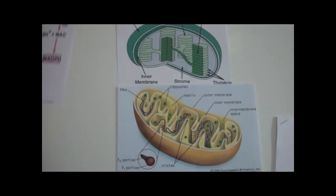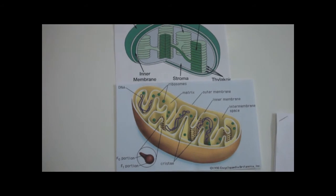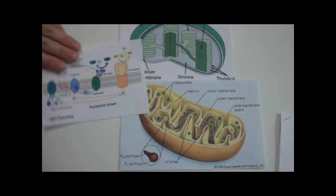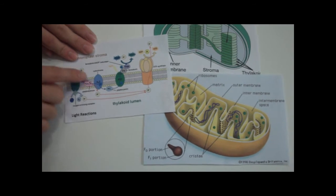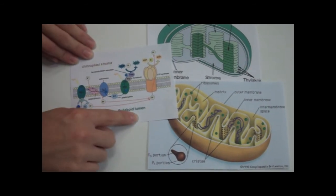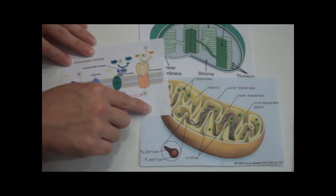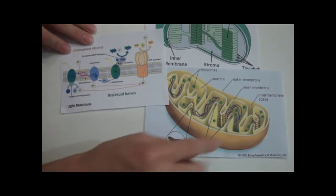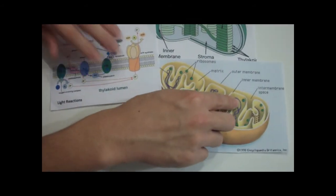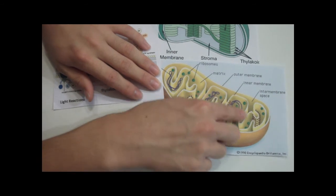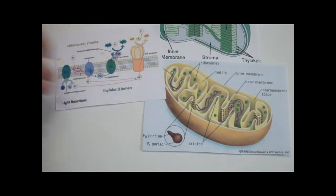The establishment of a hydrogen ion gradient is also similar in chloroplasts. The pumping of hydrogen ions from the stroma into the lumen is very similar to that done by mitochondria, which pump hydrogen ions from the matrix to the intermembrane space. Both processes get their energy from the electron transport chain.